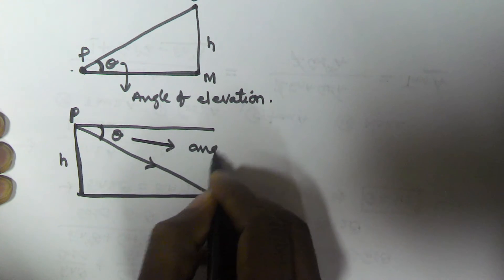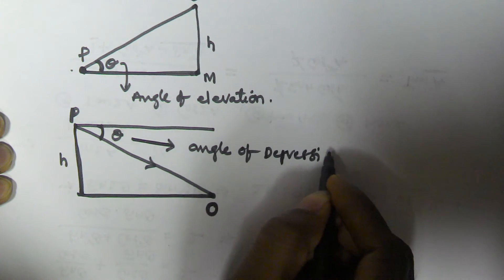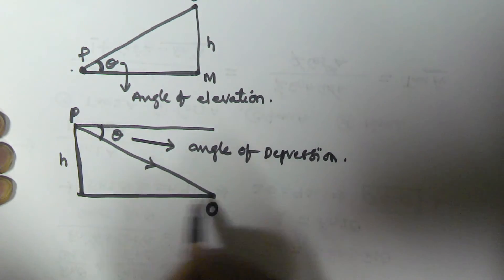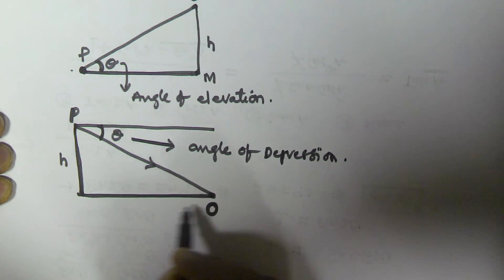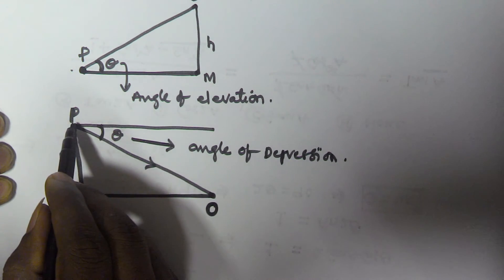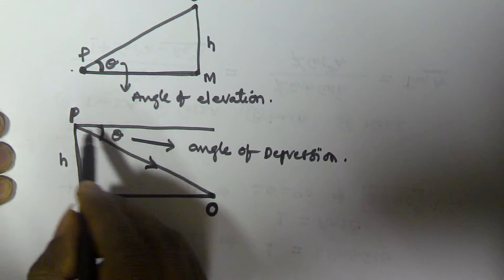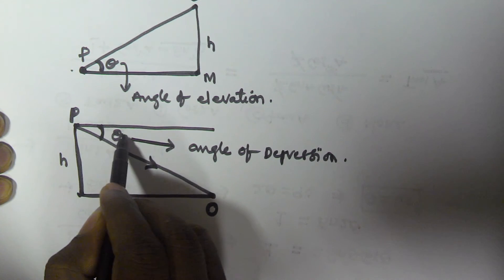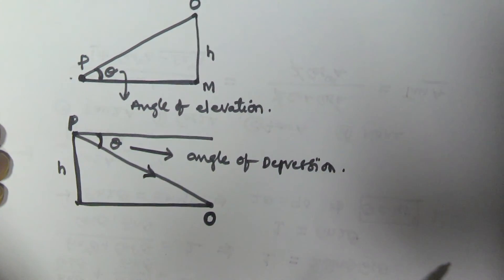This angle theta is called the angle of depression. So, on a flat surface, object O is there. The person P is at height H, looking at object O downward. We draw a straight line from the person, take this angle — and this angle is called the angle of depression.